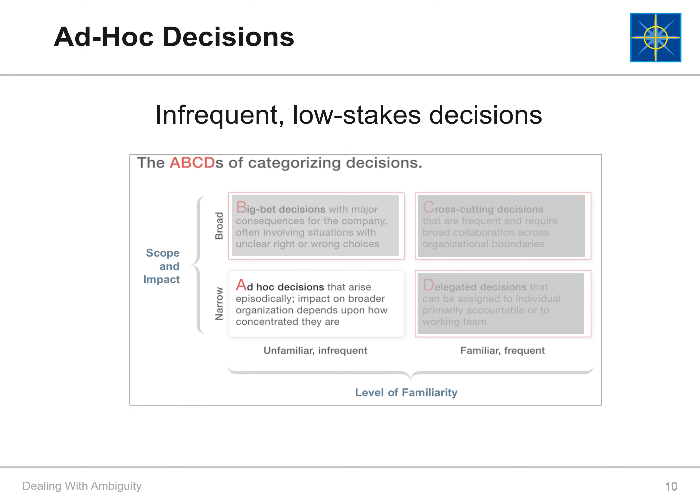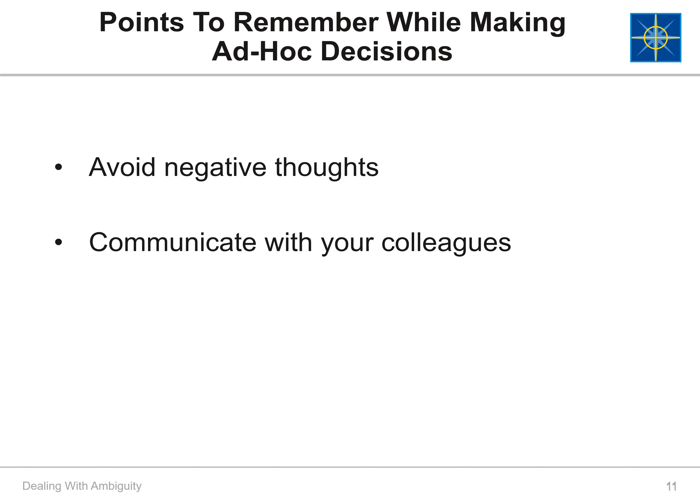Let's first talk about ad hoc decisions. These decisions are infrequent and low stakes. They have narrow scope and impact. Their impact on the organization depends upon how concentrated they are. It's easy to dismiss this type of decision because it's low stakes — keep your focus and avoid negatively dismissing it as unimportant. Also, keep communicating with your team and colleagues through the decision-making process so they know what to expect, even if it is low stakes.